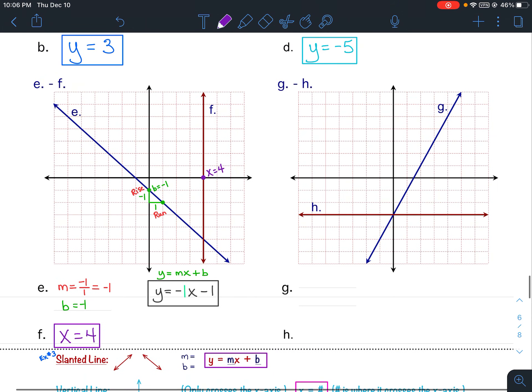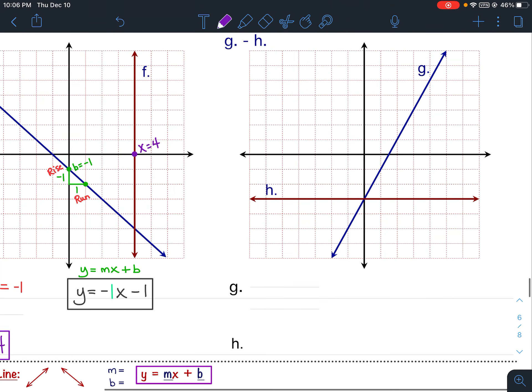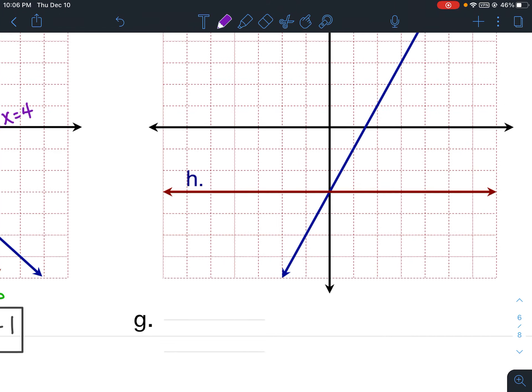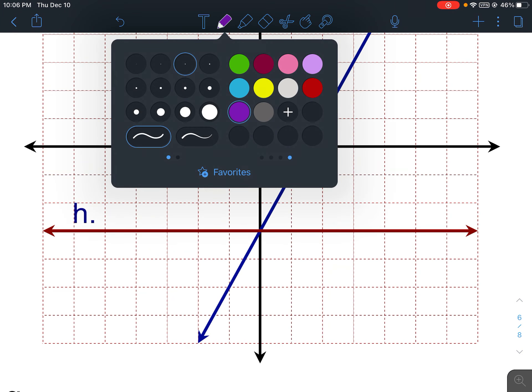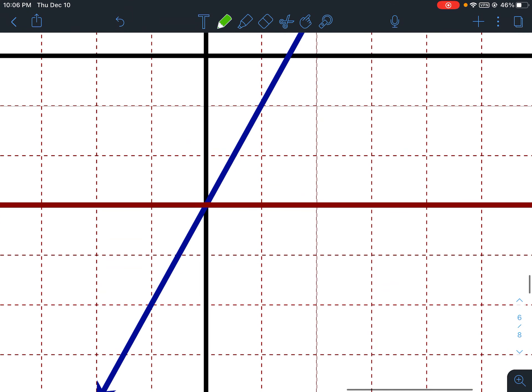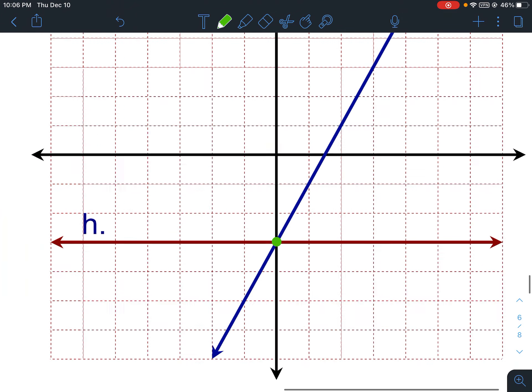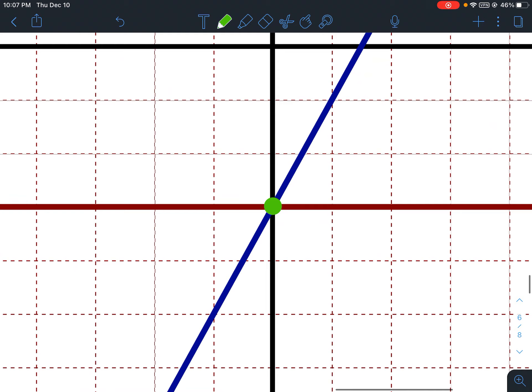Alright, let's go to g. Once again, g is a slanted line. So, the first thing I'm going to look at is the y-intercept. So, that is the point where, it's actually the point where both g and h cross the y-axis. Let's start with g. So, this would be our y-intercept, which is down 1, down 2, down 3. Since it went down 3, our b is negative 3.